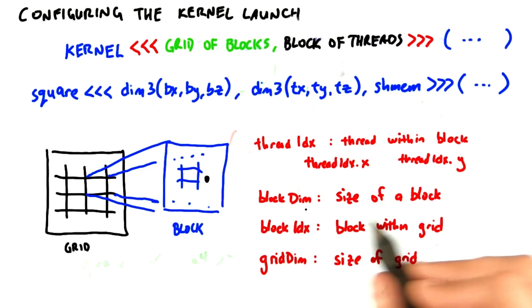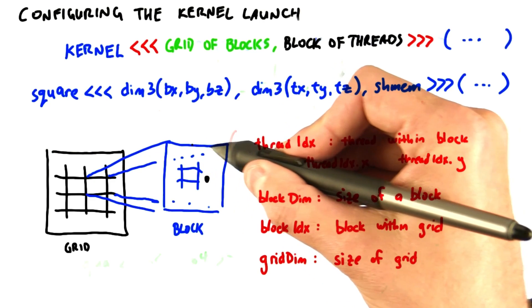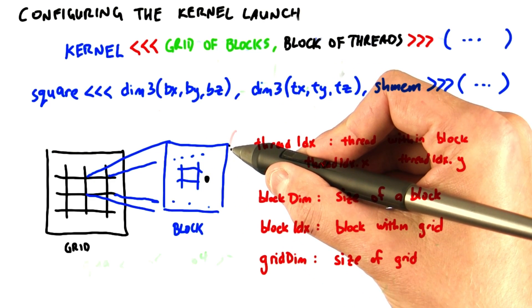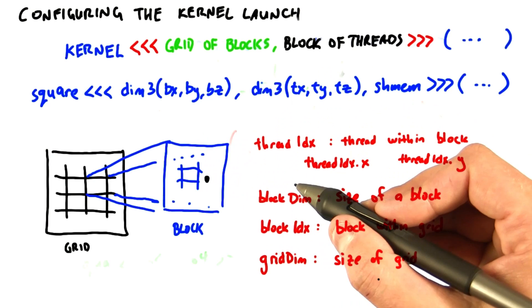We also know blockDim, the size of a block. How many threads are there in this block along the x dimension, the y dimension, and potentially the z dimension?